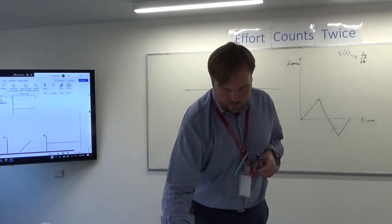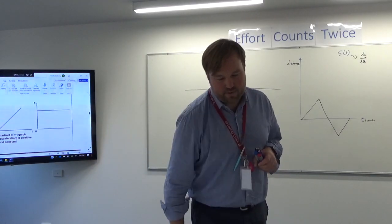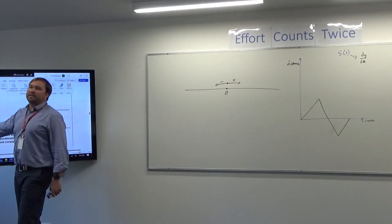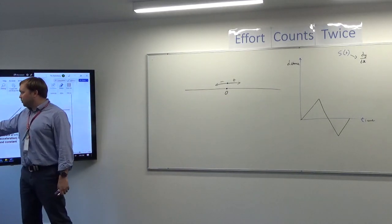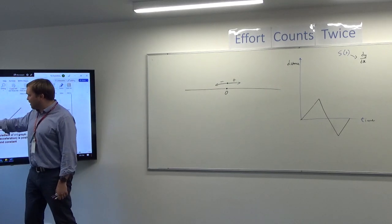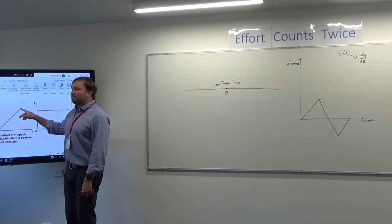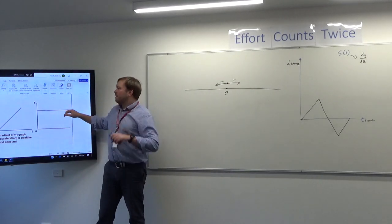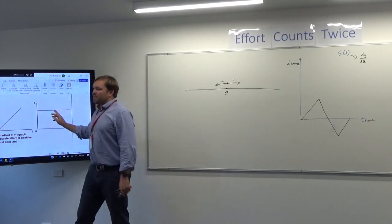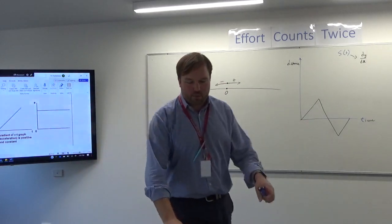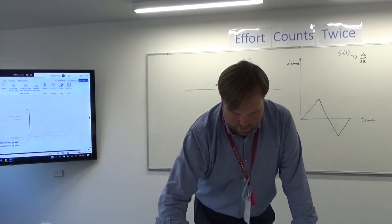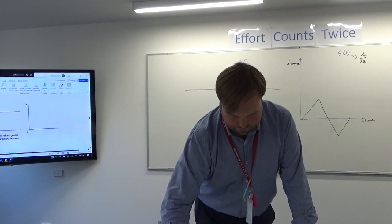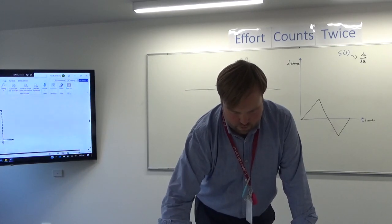With positive acceleration, the particle starts off not moving and then accelerates to the right, meaning the velocity is getting faster and faster, but the acceleration is just constant. You differentiate between each of these, and we'll do more examples on the next page.